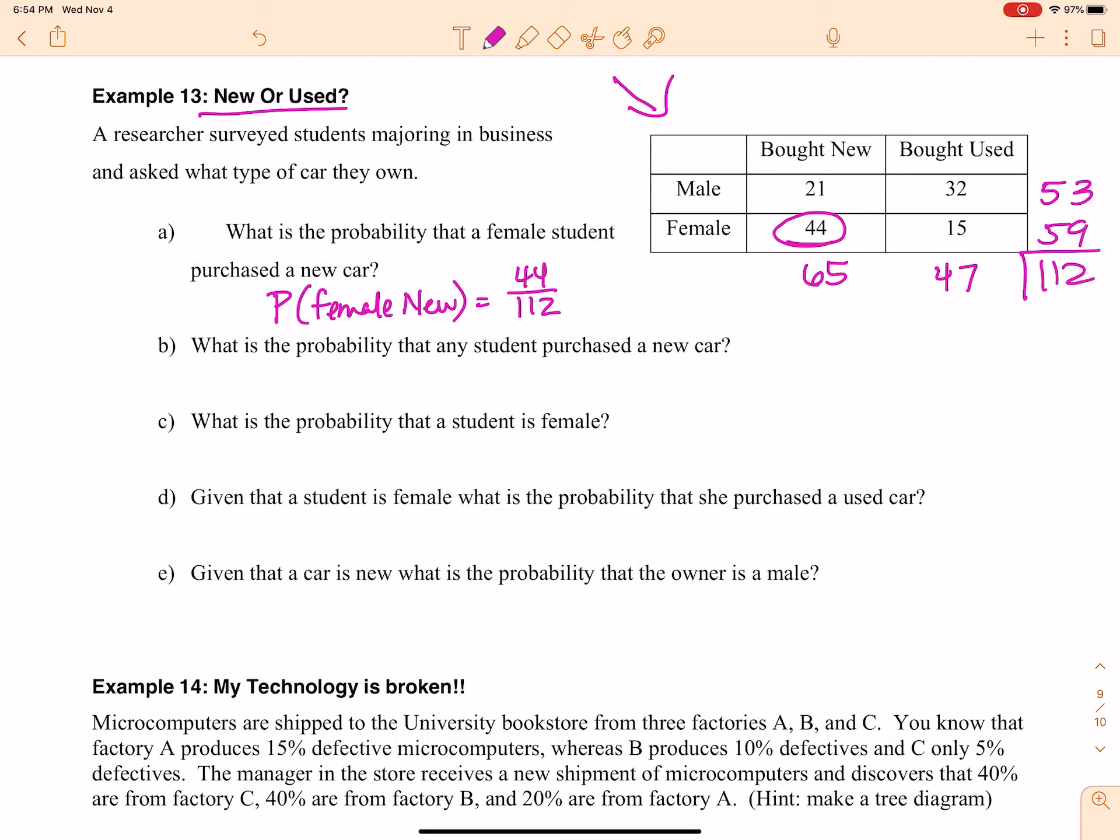All right, part B, what is the probability that any student purchased a new car? So the probability that anyone purchased a new car? Well, the bought new people are right here, so that it would be 65 over 112, just like that.